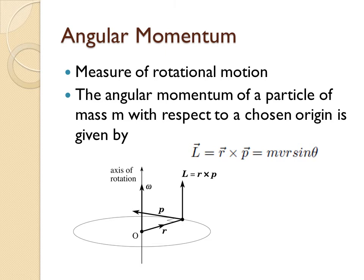Expanding the cross product: L = r × p = mvr·sinθ. From the figure, r is the position vector and p is the momentum direction. The cross product is perpendicular to both. If the body moves anticlockwise, by the right-hand rule the direction of L is upward; if clockwise, L is directed downward. The direction of L changes depending on the positions of r and p.